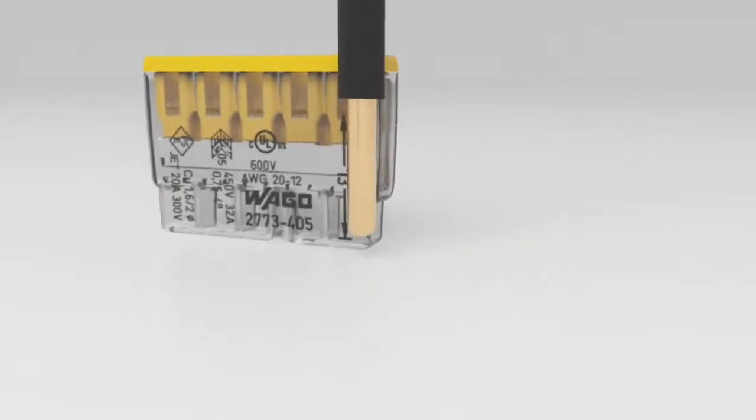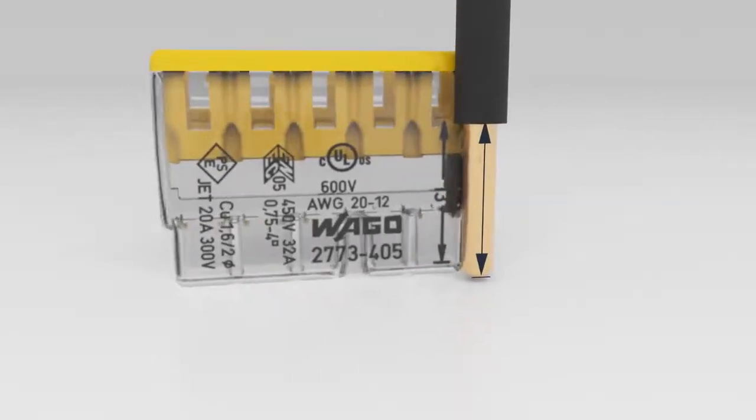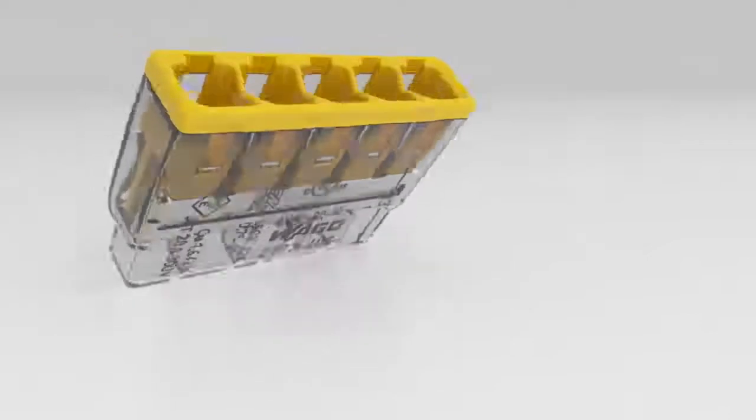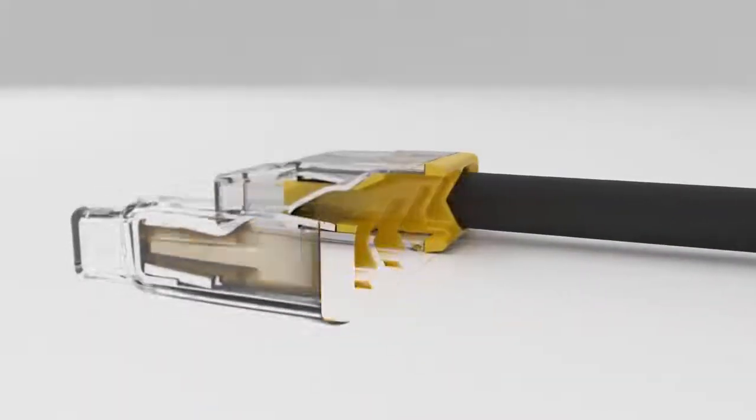Simply strip the conductor according to the strip length guide printed on the side of the connector housing. Insert the stripped conductor until it hits the backstop.